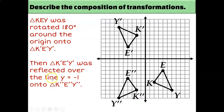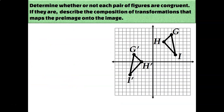This is the composition of transformations that maps triangle K'E'Y' to triangle K''E''Y''. It's relatively easy to describe the composition of transformations when you see all three triangles on the coordinate plane. But it's actually far more common to have only two triangles on the plane at a time, and you have to imagine where the one in the middle should have been. So it's going to take us two transformations to get from triangle GHI to triangle G'H'I', but there's no middle triangle to tell us how we got here. You have to look at the orientation of the triangles and figure out what kind of transformations would get you to where you need to go.